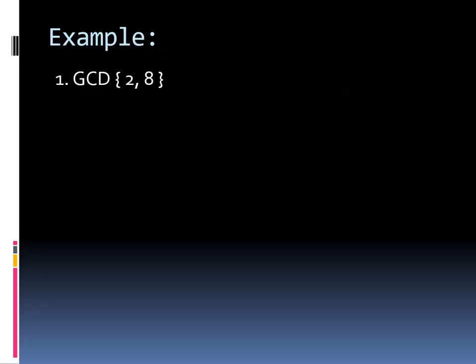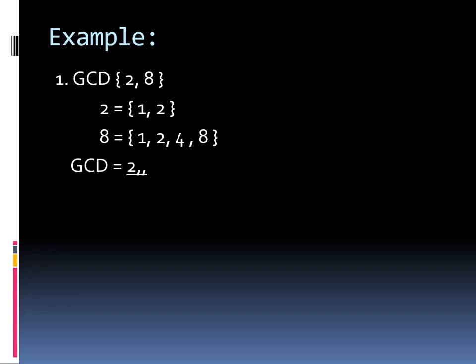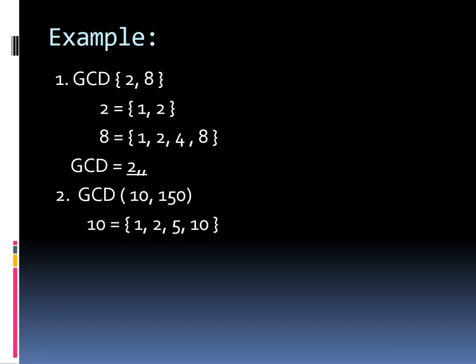Example number one: what is the GCD of 2 and 8? What you are going to do first is list down the divisors of 2 and 8. From 2 we have 1 and 2, and for 8 we have 1, 2, 4, and 8. So the common divisors are 1 and 2. Since we are looking for the greatest, the GCD of 2 and 8 is 2.